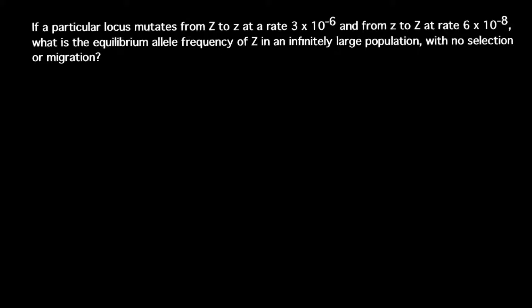If a particular locus mutates from Z to z at a rate 3 × 10^-6 and from z to Z at rate 6 × 10^-8, what is the equilibrium allele frequency of Z in an infinitely large population with no selection or migration?